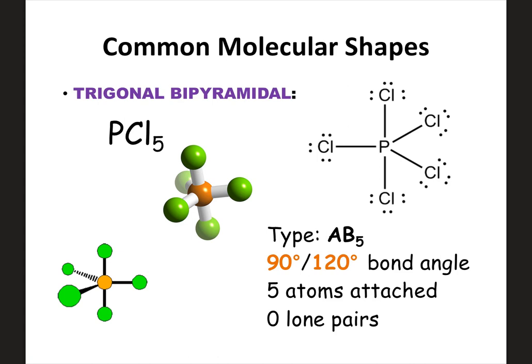Now we're up to shapes with five atoms attached. Trigonal bipyramidal has five attached and zero lone pairs on the center. An easy way to remember: 'tri' is three, 'bi' is two, three plus two is five. Five attached, zero lone pairs on the center — trigonal bipyramidal. It has multiple bond angles, which you can figure out from the shape, so memorizing them isn't as critical.